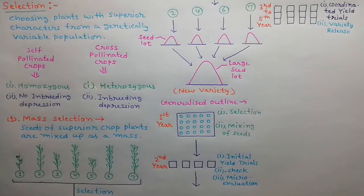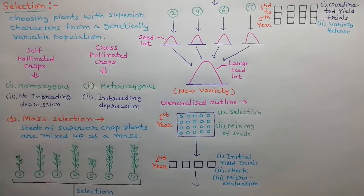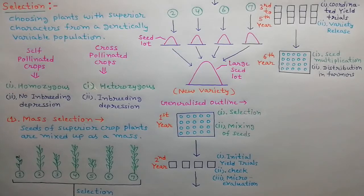In the third to fifth year, coordinated yield trials are organized for selected populations superior from check varieties. If the selected population is found superior in all characters, it is released as a new variety. In the sixth year, seeds of the newly released variety are multiplied and distributed to farmers.